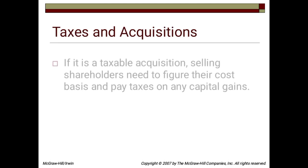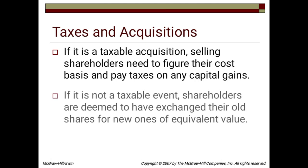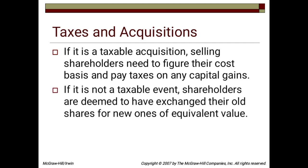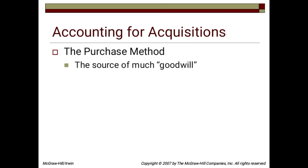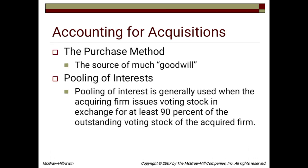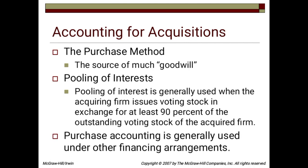Taxes and Acquisitions. If it is a taxable acquisition, selling shareholders need to figure their cost basis and pay taxes on their capital gains. For accounting for acquisitions, the purchase method is the source of much goodwill. Pooling of interest is generally used when the acquiring firm issues voting stock in exchange for at least 90% of the outstanding voting stock of the acquired firm. Purchase accounting is generally used under other financing arrangements.